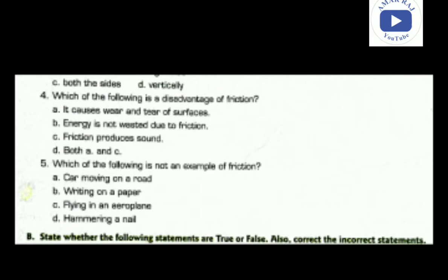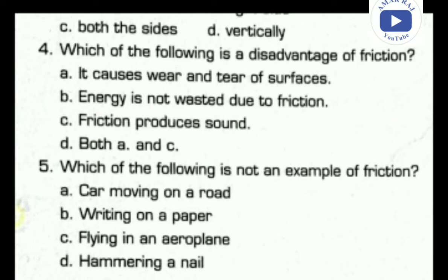Question number four: which of the following is a disadvantage of friction? Option A: it causes wear and tear of surfaces — this is correct. Option B: energy is not wasted due to friction — this is wrong. Option C: friction produces unnecessary sound — this is also correct. So the answer is D, which includes both A and C.